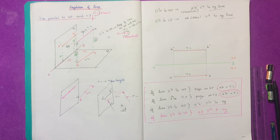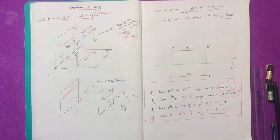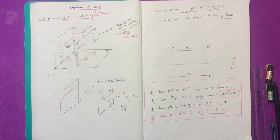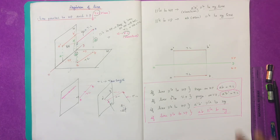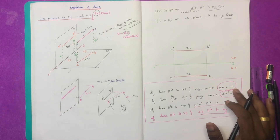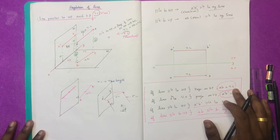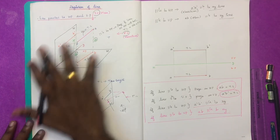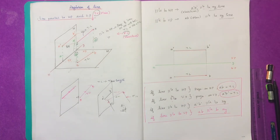If the line is parallel to VP, then AB will be parallel to the XY line. If the line is parallel to HP, then A'B' will also be parallel. In the case of true length, we will do the same thing. This is the problem — it is actually a bit complicated.